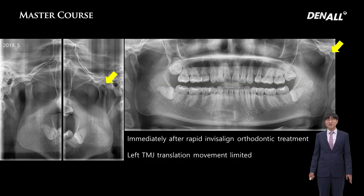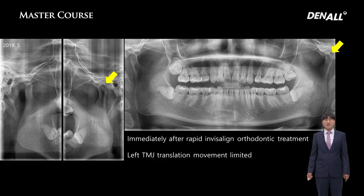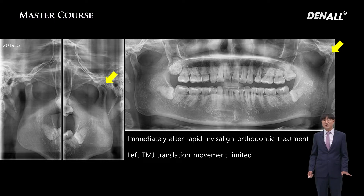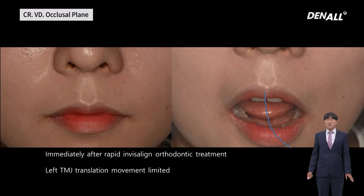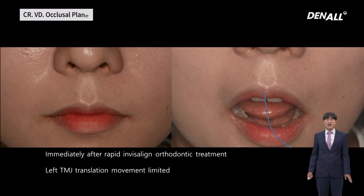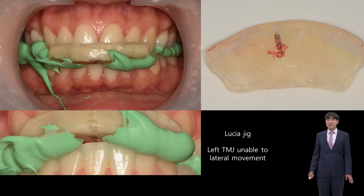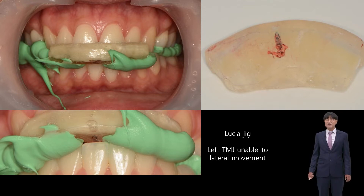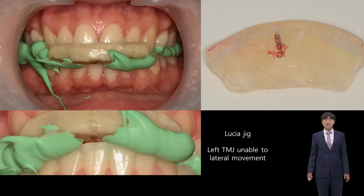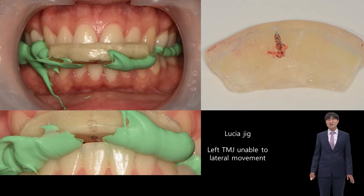The patient said that immediately after rapid Invisalign orthodontic treatment, which was started 3 months before, left TMJ translation movement limitation occurred. If you look at the patient carefully, you can notice the left deviation when the mouth is opened. Due to the translation movement limitation on the left TMJ, a Lucia jig is used, as it separates the back teeth to block the neuromuscular system. It is used to find the position where anterior and lateral movement starts, which is considered CR. The lateral movement being impossible means the movement is not registered.